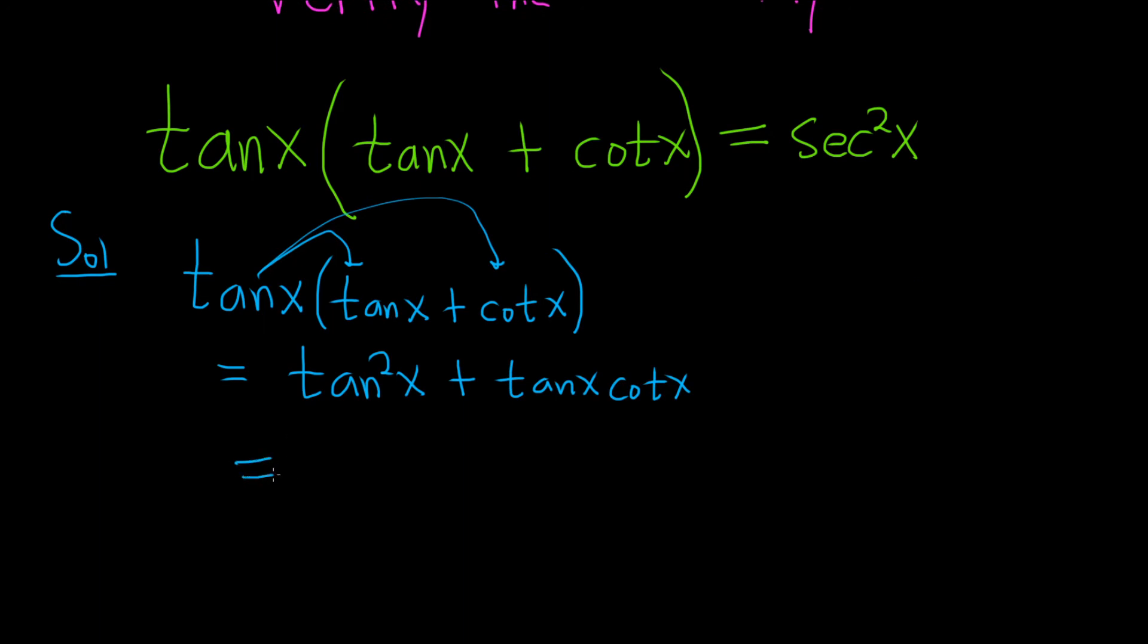This is equal to... I think we'll leave tangent squared as it is. And then cotangent is equal to 1 over tangent, so let's rewrite it that way. This is tangent of x times 1 over tangent. Ah, look, they cancel. So this is equal to tangent squared x plus 1.